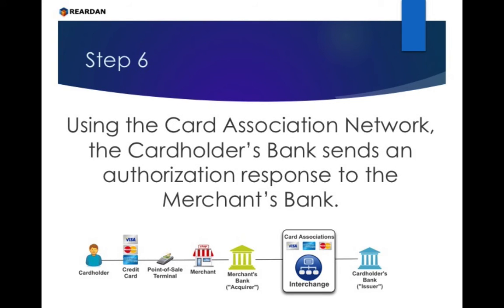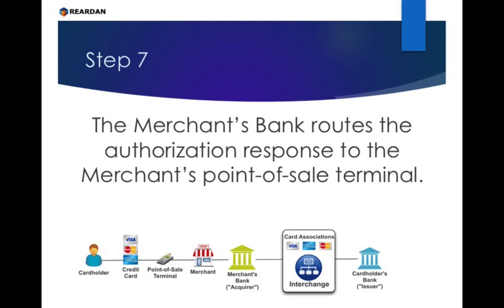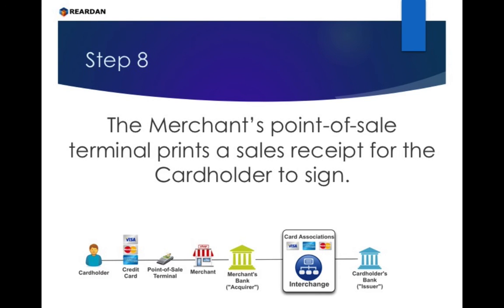Step 6: Using the card association network, the cardholder's bank sends an authorization approval response to the merchant's bank. Step 7: The merchant's bank routes the authorization approval response to the merchant's point of sale terminal. Step 8: The merchant's point of sale terminal prints a sales receipt for the customer to sign.